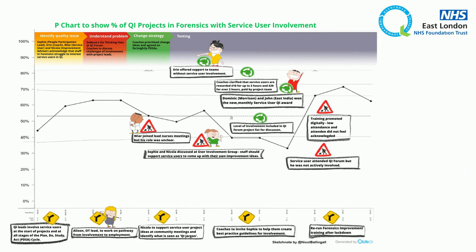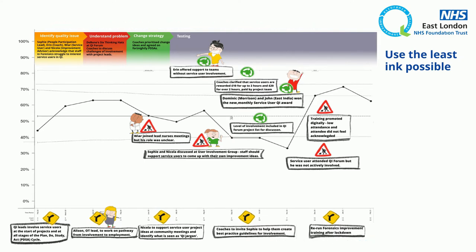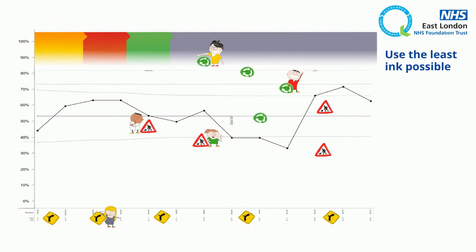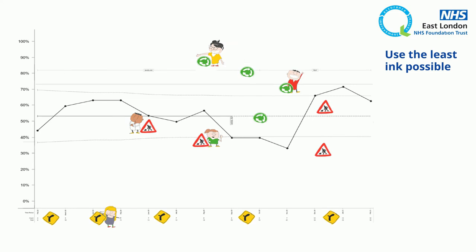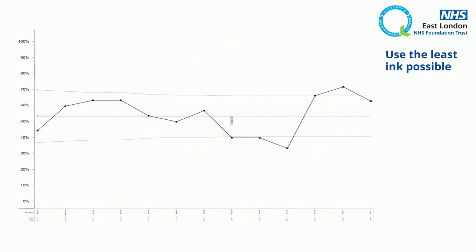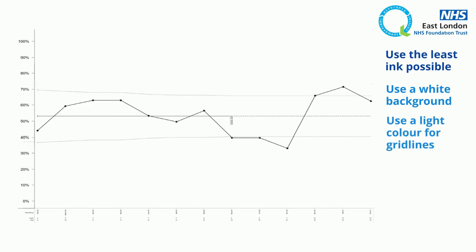Tufte's first principle is to use the least ink possible. This means only using data ink, so we're going to remove everything not directly related to the data, such as text, markings, colours and shading, and fancy art and borders. It's best to use a white background, but if you need to use grid lines to help the reader, make them a light colour and avoid 3D displays.